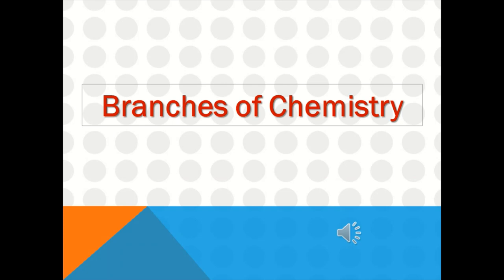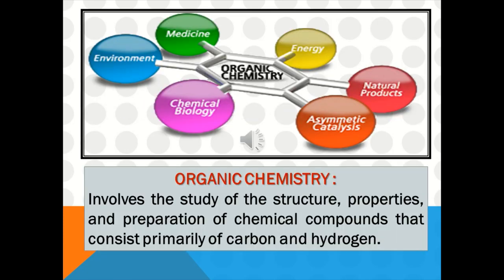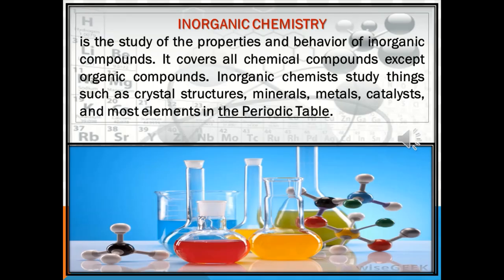Branches of Chemistry. Organic Chemistry involves the study of the structure, properties, and preparation of chemical compounds that consist primarily of carbon and hydrogen. Inorganic Chemistry is the study of the properties and behavior of inorganic compounds. It covers all chemical compounds except organic compounds.